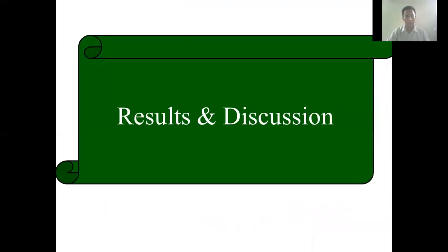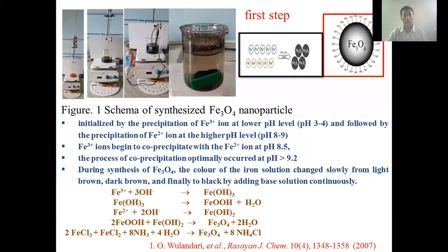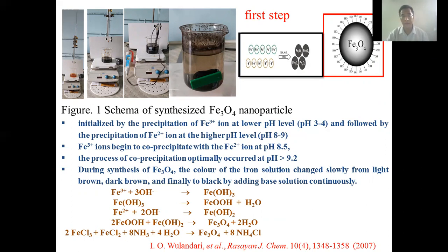Now for results and discussion. Firstly, the mechanism of the co-precipitation process to form chitosan-coated Fe3O4 nanoparticles consists of a two-step process, which includes the formation of Fe3O4 nanoparticles to form the ferrite phase.